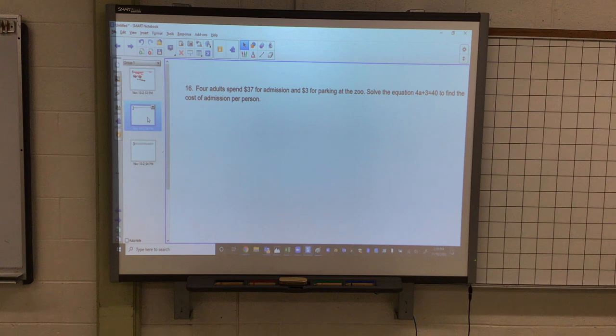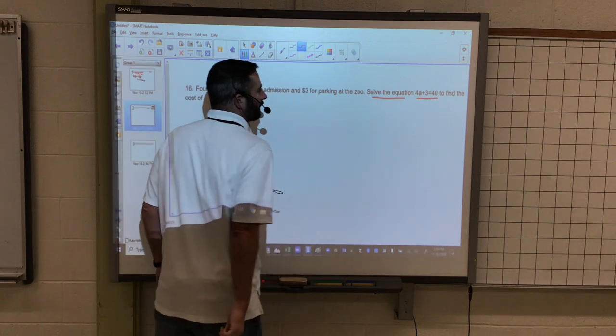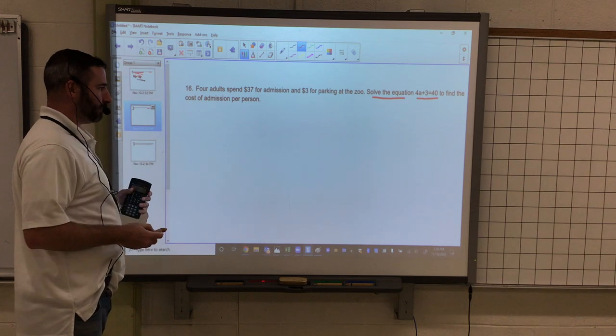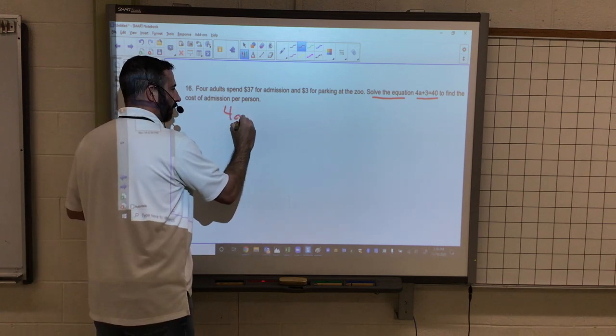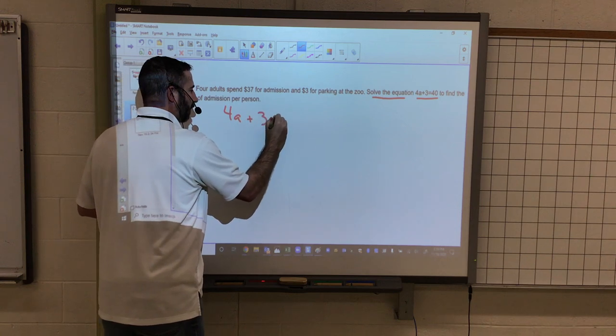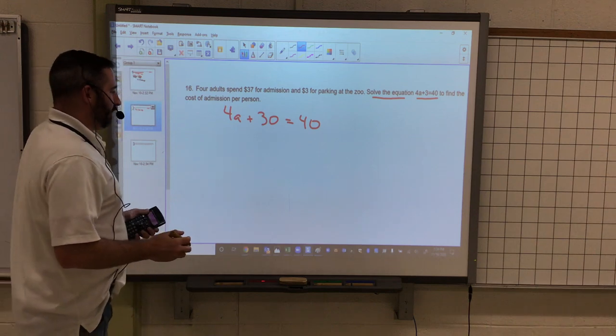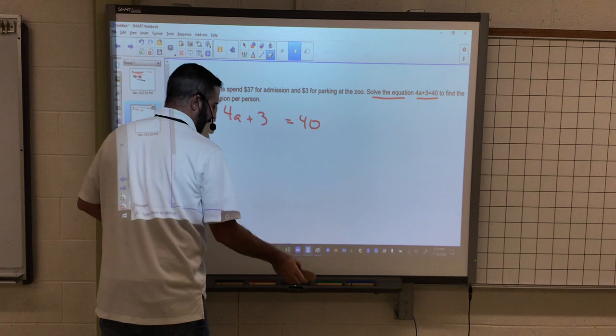Although they're setting up this problem, they're actually very nice and they gave us the equation here. So again, we're asked to solve the equation 4A plus 3 equals 40 to find the cost of admission per person. So we're going to set this up. That should be 4A plus 3, not 30.